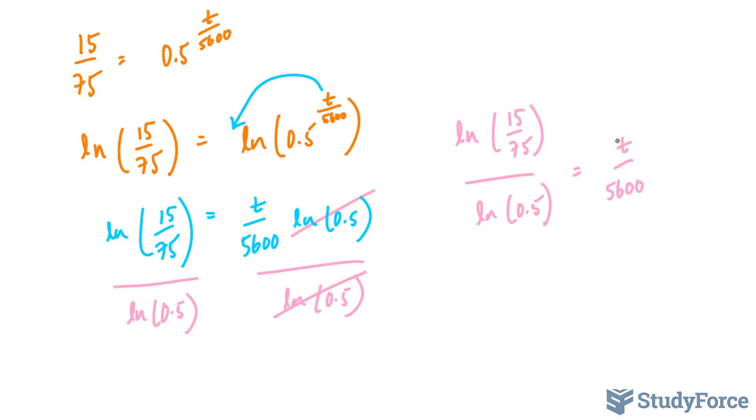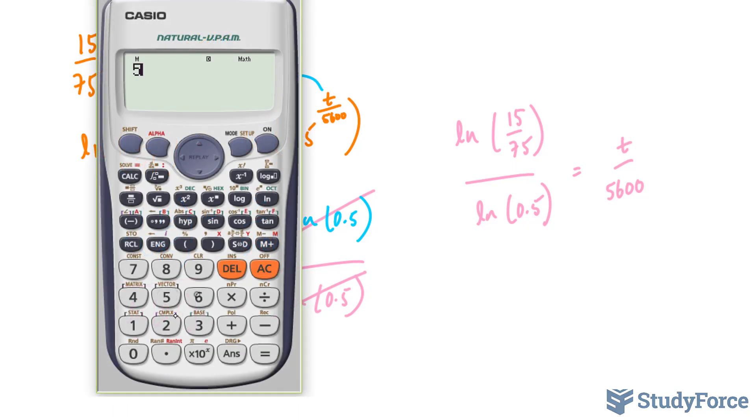Now our last step is to isolate for T by multiplying both sides by 5,600. I'll show you on the calculator: 5,600 times everything you see on the left, ln(15/75) divided by ln(0.5) close bracket.